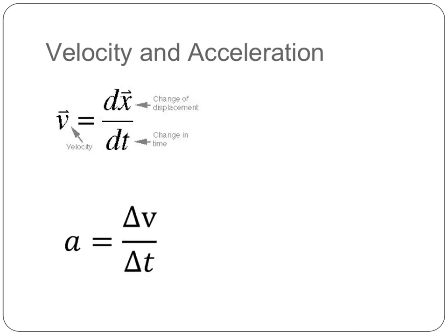All right, so from a previous flipped lesson, we talked about velocity and acceleration. Velocity is the change in displacement over time. We can also say that this is distance over time. We also have acceleration, which is the change in velocity over time.